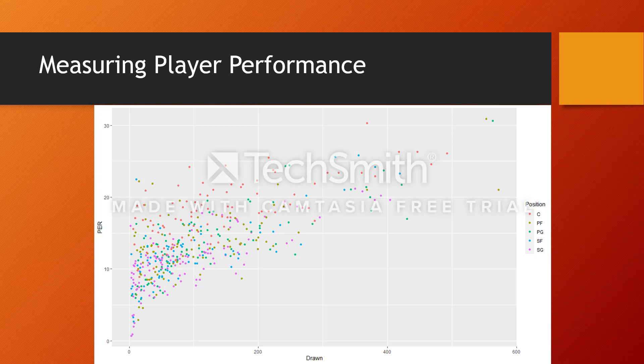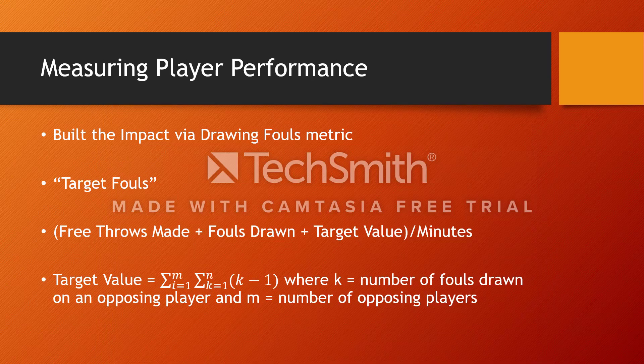I wanted to see if there was a better way to measure this than just looking at how many fouls a player draws in the abstract. That brings me to my project's real main focus, which was building the Impact via Drawing Fouls metric — the IDF. This is meant to be a much better indicator of player performance if you're wanting to focus in on a player's offensive impact through getting other players to foul them.